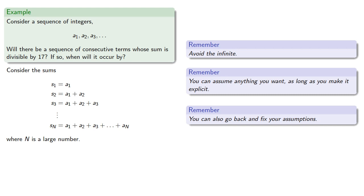Now since we're looking for a sum that's divisible by 17, let's consider the remainders when these partial sums are divided by 17. The remainders when the Si are divided by 17 are among the values 0, 1, 2, 3, up to 16.